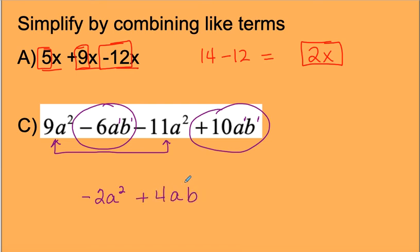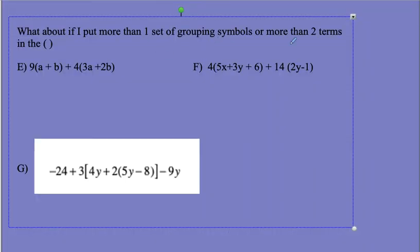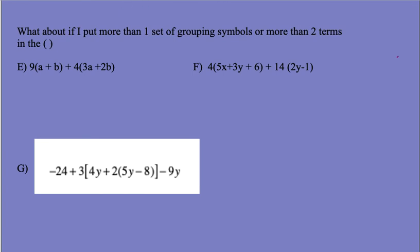You try B and D, and check the solutions guide for more. But what if I put more parentheses or more sets of grouping symbols around these terms? That means you distribute first, then combine like terms. Distribute first — distribute means multiply. Combine like terms means add. Following proper order of operations, that should make sense.